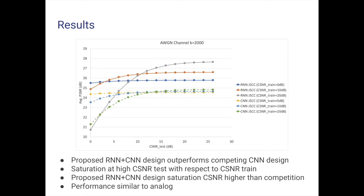Looking at just the joint source channel coding designs, both architectures successfully avoid the cliff effect seen with separate source and channel coding. Moreover, our recurrent convolutional neural network design performs significantly better than the solely convolutional design of our competition, fundamentally due to the superior compression capability of the recurrent architecture. We also observe an inherent trade-off between the training SNR and the testing SNR: if we train the network at a high CSNR, it suffers when tested at a low CSNR.